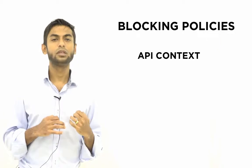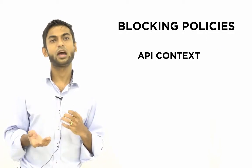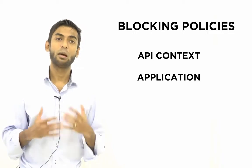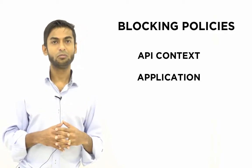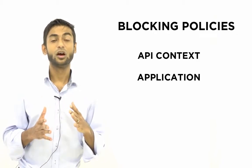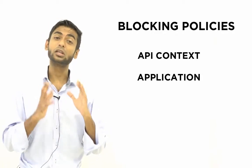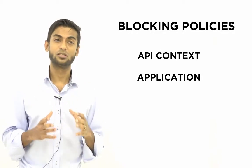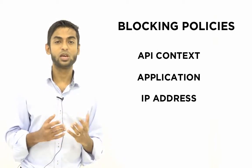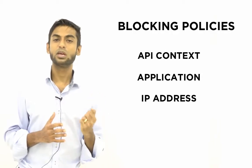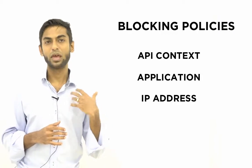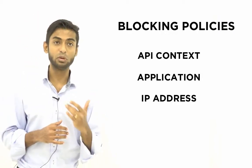The next attribute that blocking policies can be used against is application level. You could configure a particular application — you could essentially block requests from a particular application itself that is invoking that API. And then we have the IP address, where you can specify a set of IP addresses and any requests that arrive from those specific IP addresses will be blocked.